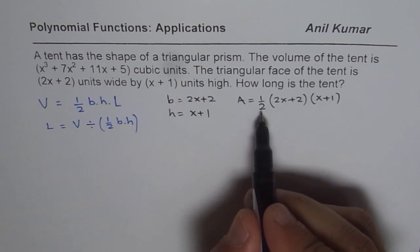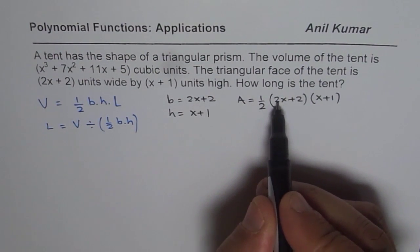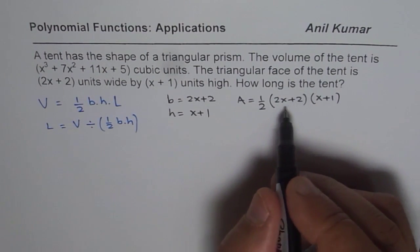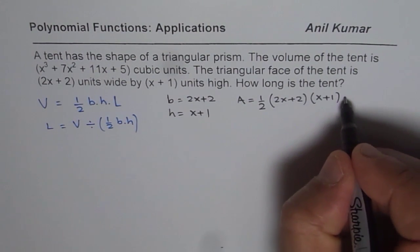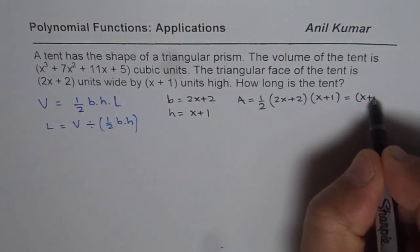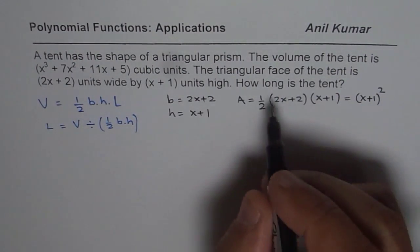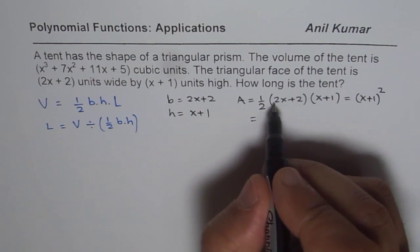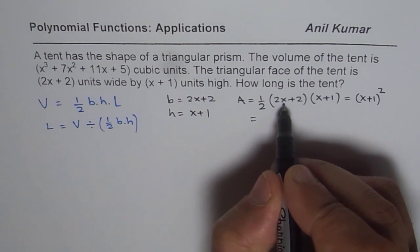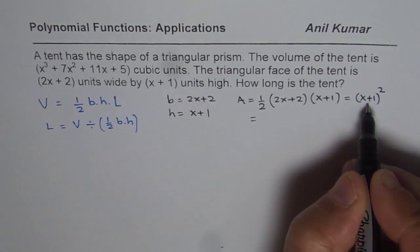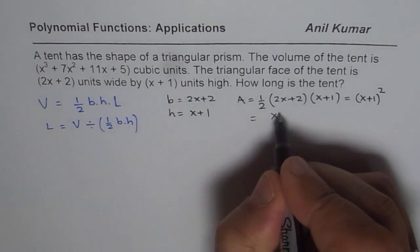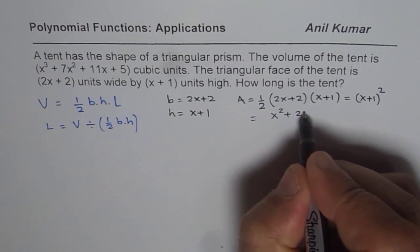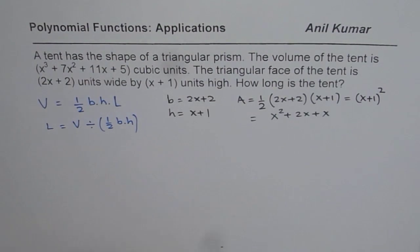If you simplify, this 2 will cancel into these 2s. We can factor them out, and basically we have x plus 1 whole square. If you factor 2 out, you get x plus 1 times x plus 1. And you can expand and write this as x squared plus 2x plus 1. That is what you get for area of the triangular prism.